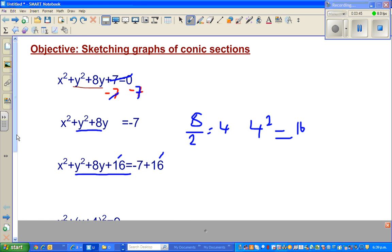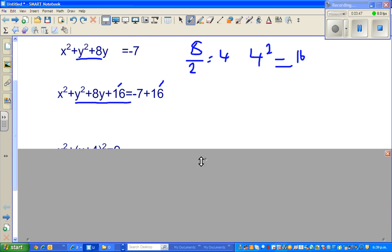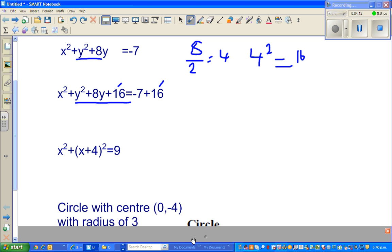Now, what's the next step? The next step, this has become a perfect square of x plus 4 squared. Or, if you think about it, which are the two factors of 16 which gives you plus 8? You know it's plus 4 plus 4. That is, 4 times 4 gives you 16 and 4 plus 4 gives you 8. So that is x plus 4 the whole squared. Now, the next step.